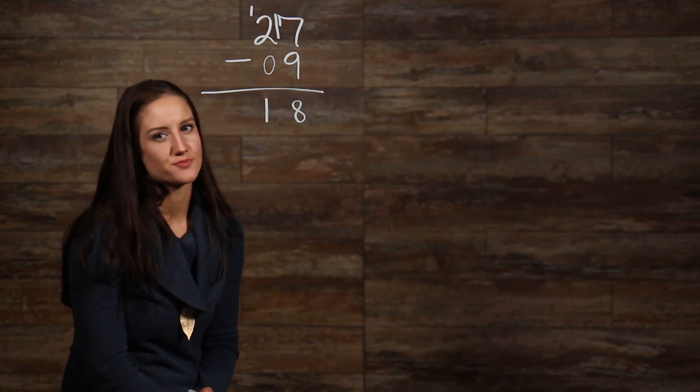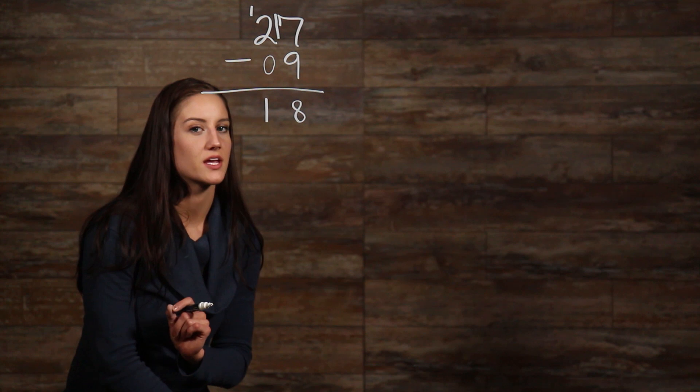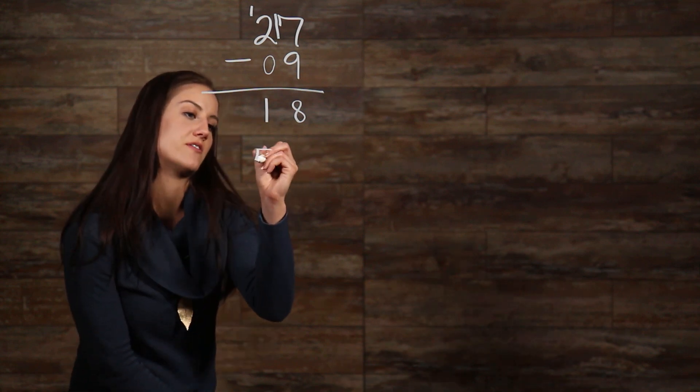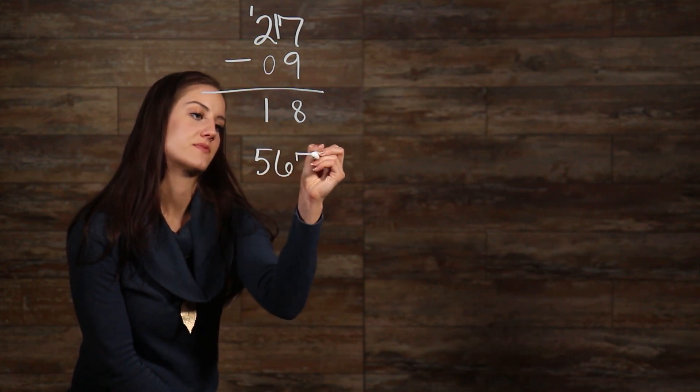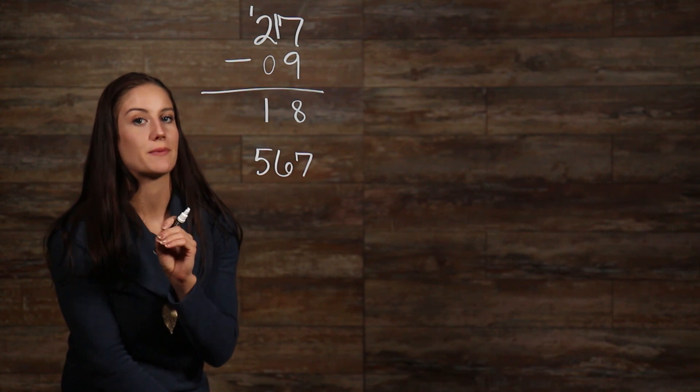Let's try something a little harder. Let's take 567 and take 98 away from it. So, don't forget, we need to line up our number places correctly. So, we have 567, and now as I write out my 98, I need to make sure to keep my place values.